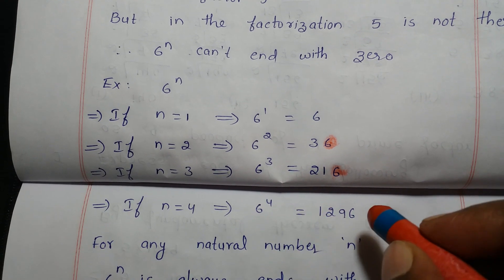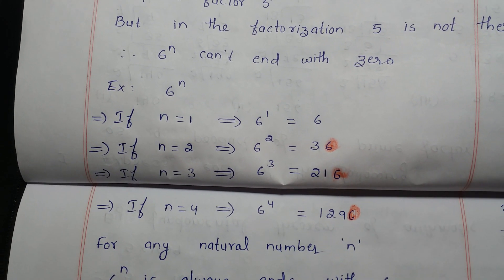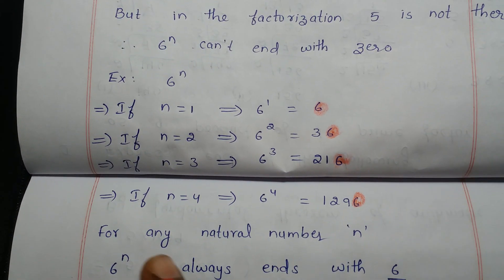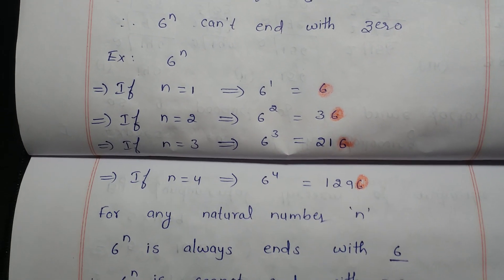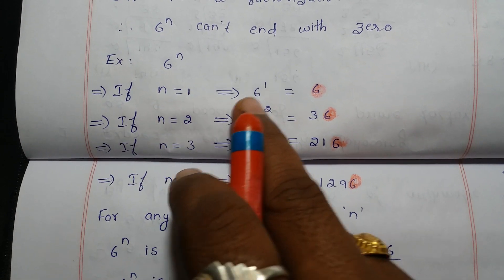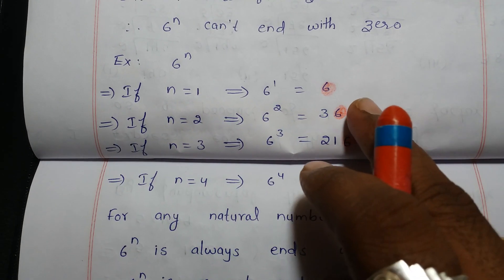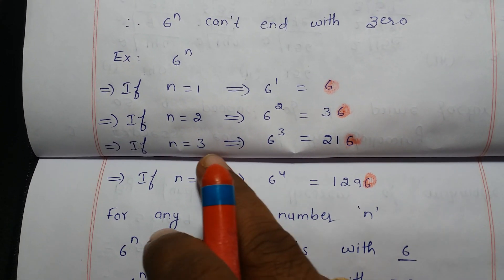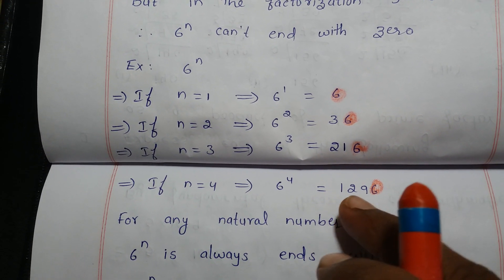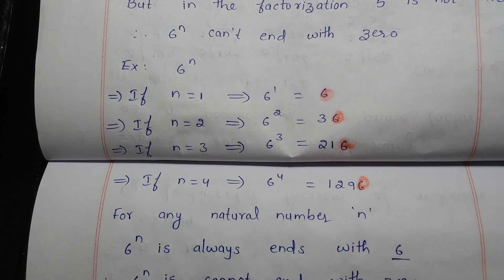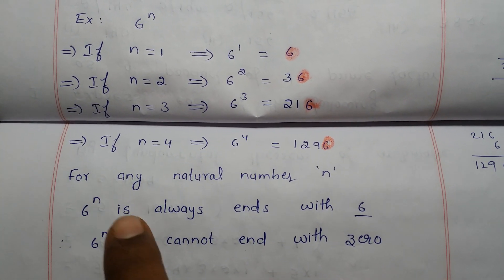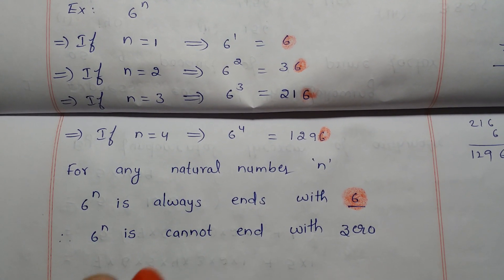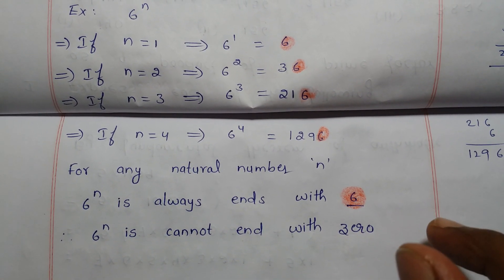Taking n = 4: 6 to the power of 4 is 1296, which also ends with 6. From all these cases we can conclude that 6 to the power of n always ends with 6 for any natural number n. Therefore, 6 to the power of n cannot end with 0.